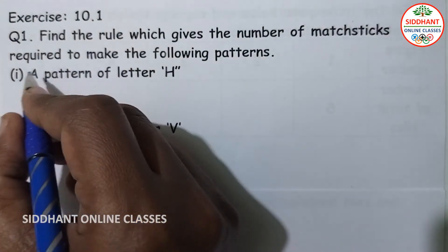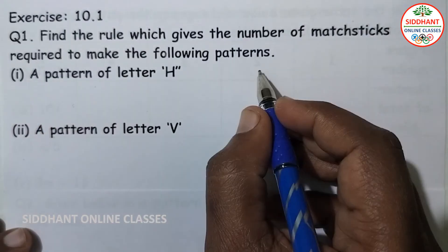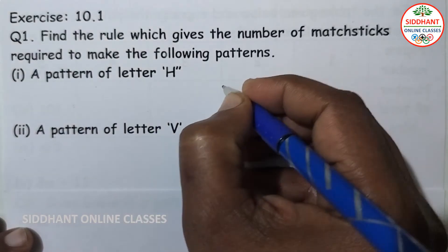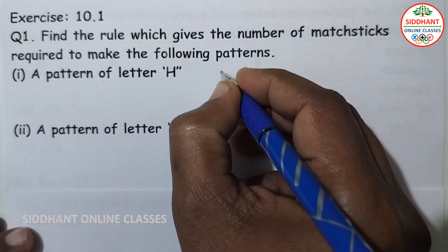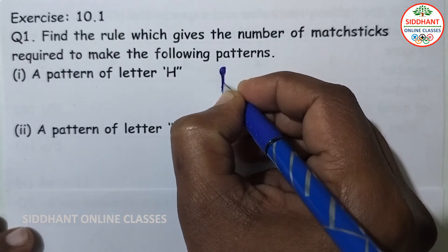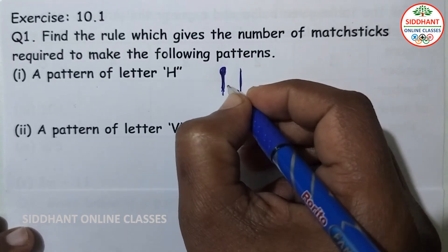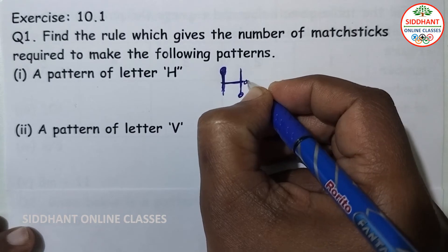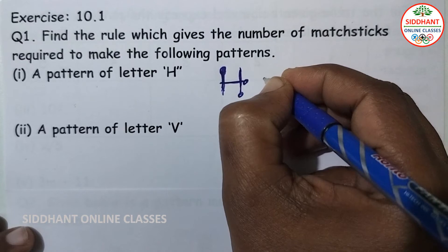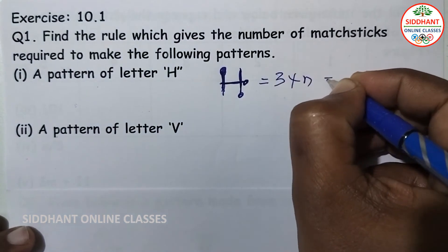Exercise 10.1, question number one: find the rule which gives the number of matchsticks required to make the following patterns. For a pattern of letter H, we are going to use three matchsticks — this is one matchstick, this is two matchsticks, and this is the third matchstick. Total three matchsticks. So the pattern will be 3 into n, that is 3n.